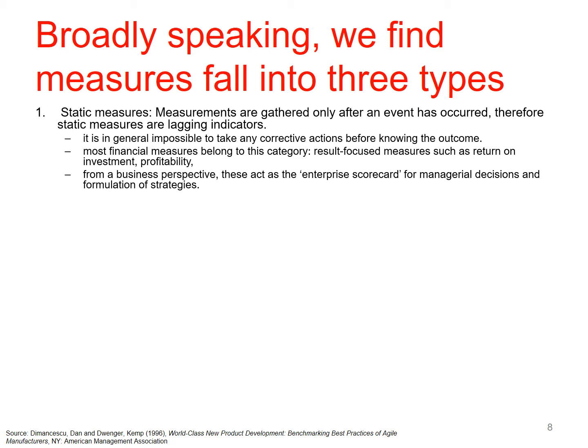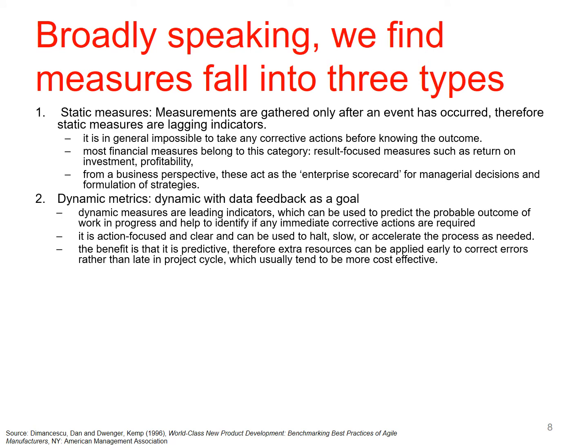From a business perspective, static measures are quite meaningful — they show you what's been going on — but they're really acting as a scorecard for managerial decisions and strategy. Dynamic measures have feedback as a goal and are leading indicators that help you predict probable outcomes, work in progress, and therefore help you make corrective actions. They're action-focused, clear, and can be used to halt, slow, or accelerate processes as needed. The benefit is that they're predictive, so corrective actions can be applied early rather than late in a project cycle, which is usually more cost effective.